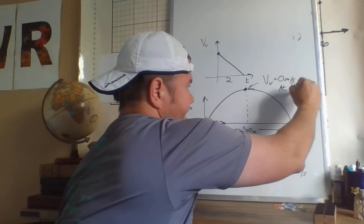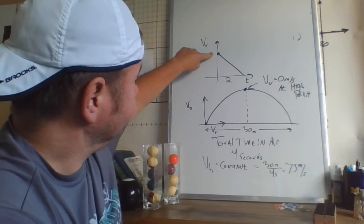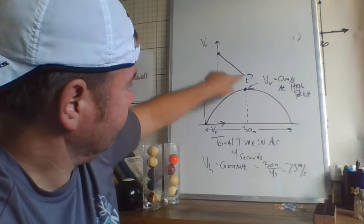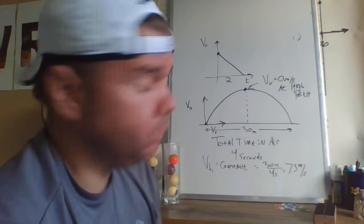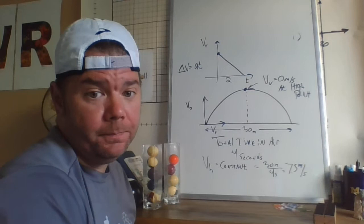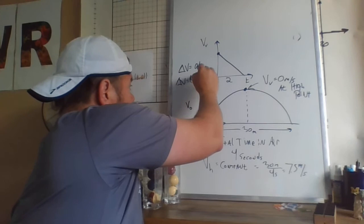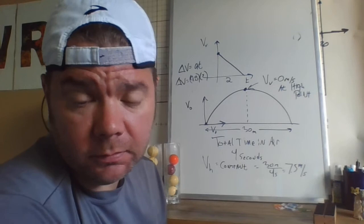At highest point, okay. So if it's in the air for two seconds, it goes from whatever it started at to zero in two seconds. That means the acceleration was 9.8, the time was two. Change in velocity equals acceleration times time, which means change in velocity here would be 9.8 times 2, which is 19.6.